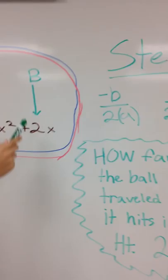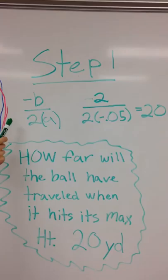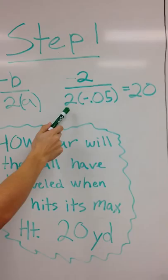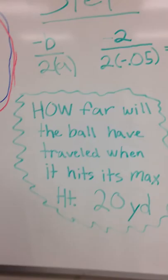Then you take these and plug them into this formula. Negative b, which would be your 2, over here. Then you plug the -0.05 in right here. When you multiply these out, you take 2 times the -0.5, then do the 2, and it equals 20. That is how far the ball will have traveled when it hits its max height: 20 yards.